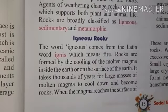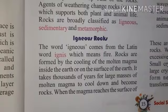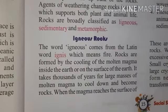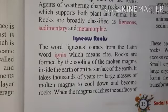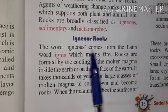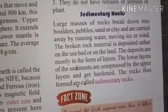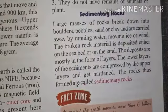The molten material from inside the earth is called lava. When lava cools down and solidifies, we call it igneous rock. The next type is sedimentary rock.